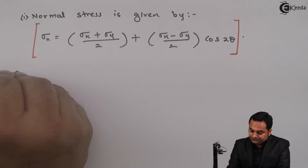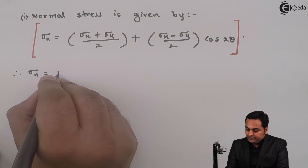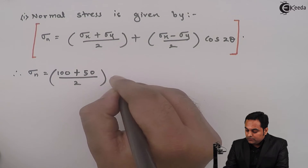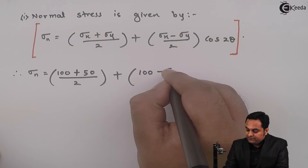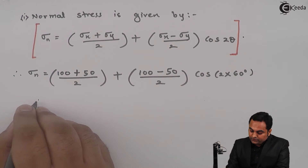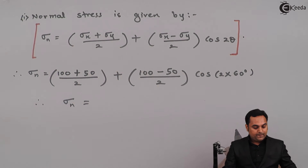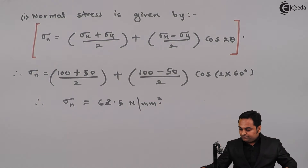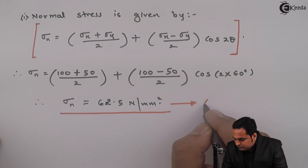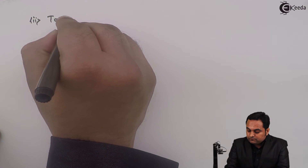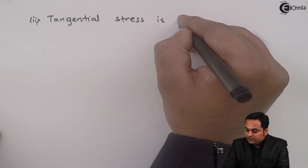Putting the values — Sigma X is positive so it is 100, Sigma Y is 50, divided by 2, plus (100 − 50) / 2 × cos(2 × 60°). Calculating this, the normal stress comes out to be 62.5 Newton per mm square. This is the first answer.